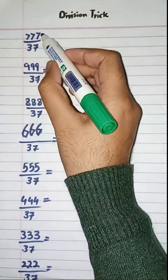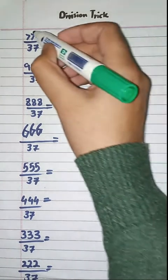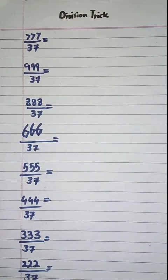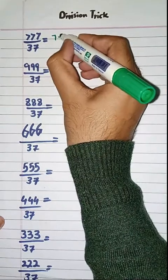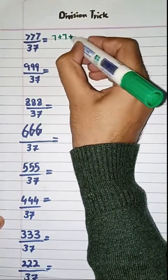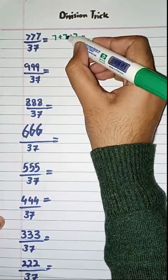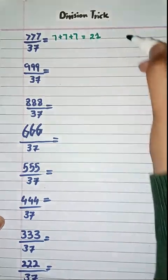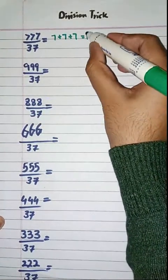First we have to divide 777 by 37. As you see, this number contains only the digit 7. The trick is simply to add the digits of this number: 7 plus 7 plus 7. So 7 plus 7 is equal to 14, and 14 plus 7 is equal to 21. So here is your answer — 777 divided by 37 is equal to 21.